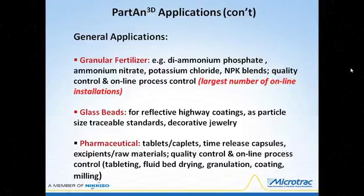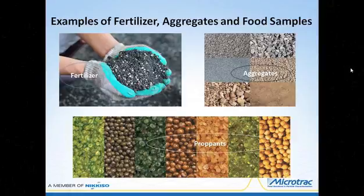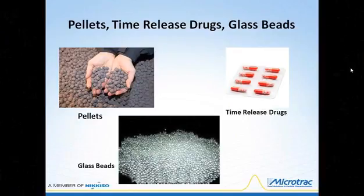The large and diverse pharmaceutical industry utilizes image analysis for quality control of products such as tablets, capsules, and excipients, and for both process and quality control in operations including tableting, fluid bed drying, granulation, coating, and milling. Here we show a few sample types that benefit from shape characterization: granulized fertilizer, aggregates, and frac sands or proppants. And here are more examples: iron ore pellets, time-release drugs, and glass beads.